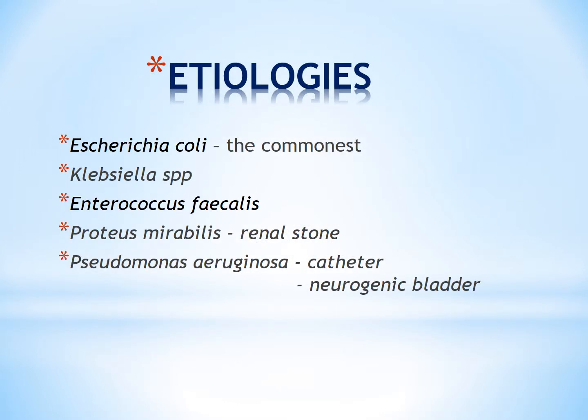E. coli is the most common cause of urinary tract infection. Other common causative organisms are Klebsiella species, Enterococcus faecalis, and Proteus mirabilis. Urinary tract infection due to Proteus mirabilis is associated with the presence of renal stones. Pseudomonas aeruginosa is an uncommon cause of UTI, usually occurring in patients with an indwelling urinary catheter or urinary stasis such as neurogenic bladder.